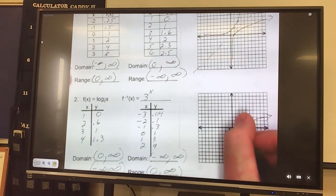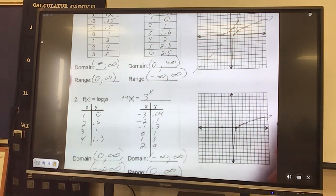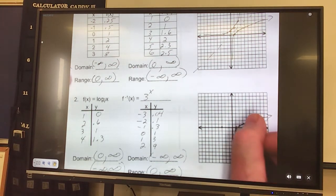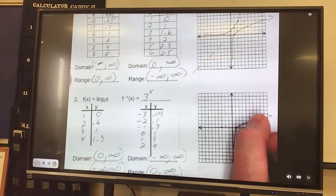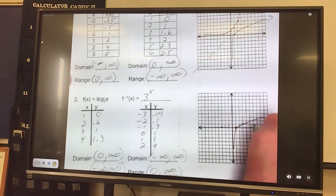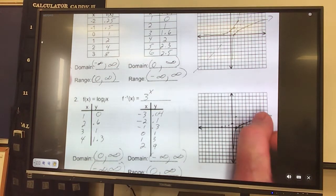So I'll go over negative 3, 1, 2, 3, up just at here, I can hardly even tell. And then over negative 2 up 0.1, so just a little bit more. Over negative 1 up 0.3, a little bit more. Over 0 up 1. And then over 1 up 3, and over 2 up 9.